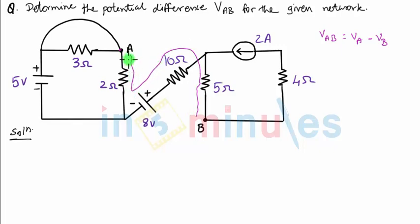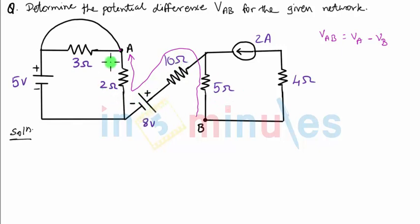I'll start from point B, go through all the components, and reach point A. The voltages I have to consider are: voltage across the 5 ohm resistance, voltage across the 10 ohm resistance, the 8 volt voltage source, and voltage across the 2 ohm resistance. My first step will be to find all these voltages.